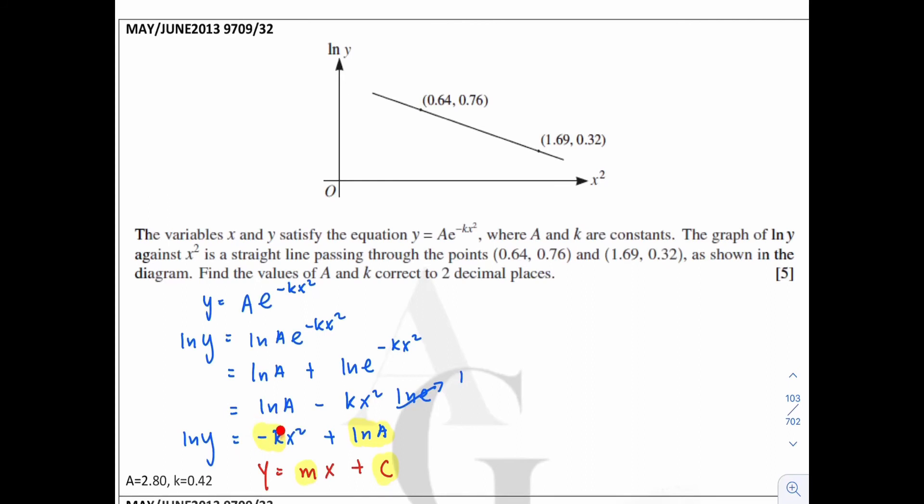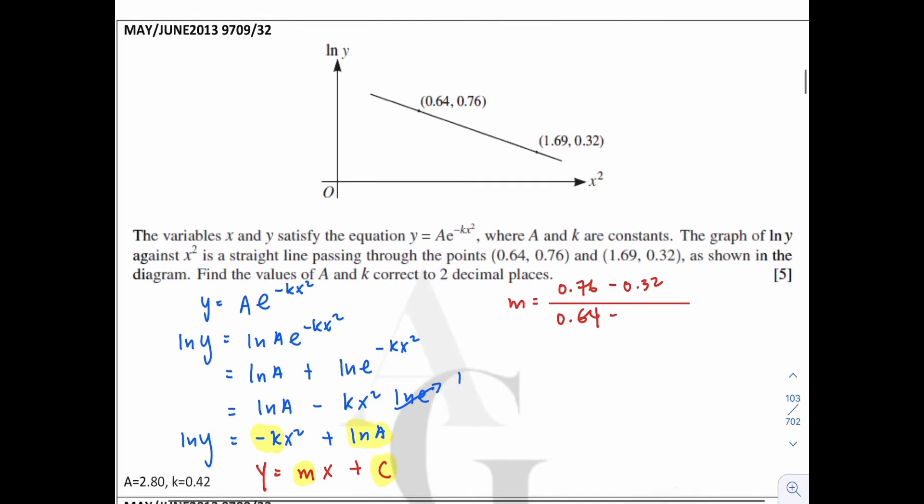So first thing, how are we supposed to find out the negative k? Then we should compare it with the gradient of the line here. Since we are provided with the coordinates, so we can use the coordinates to find the gradient, which is equal to 0.76 minus 0.32 over 0.64 minus 1.69. And you will get negative 0.4190, which is equal to negative k. And hence, the k's answer, according to what is requested in the question, correct to two decimal places should be equal to 0.42. Alright, so this is how we find out the k's value.